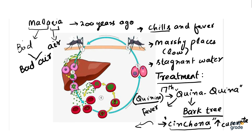اسی دوران doctors یہ check کرنا چاہ رہے تھے کہ جو stagnant water ہے، کیا malaria اس کی وجہ سے ہوتا ہے یا نہیں — کیونکہ ابھی تو صرف medicine introduce ہوئی تھی، یہ نہیں پتا چلا تھا کہ malaria کس وجہ سے ہوتا ہے۔ اس کے لیے انہوں نے کچھ لوگوں کو گندہ پانی پلایا۔ یہ biological method کا first step تھا — observation۔ Physician نے observe کیا کہ stagnant water پینے سے malaria نہیں ہوتا — یہ ان کی observation تھی۔